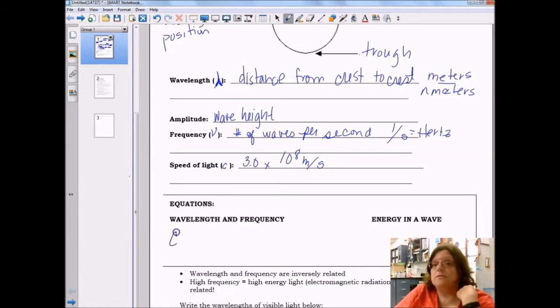All light travels at the speed of light, so all light travels at 3 times 10 to the 8 meters per second. So that relationship of wavelength and frequency can be described in this equation. The speed of light is equal to the wavelength times the frequency.